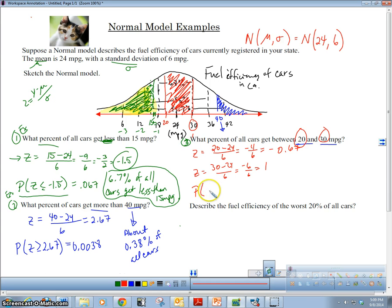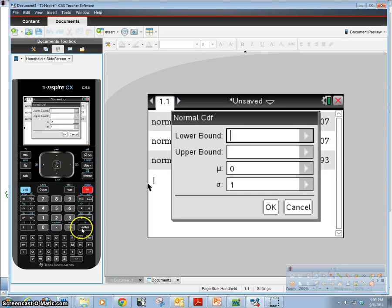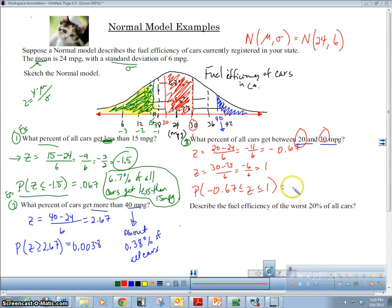We're going to go to our calculator. Menu, statistics, distributions, normal CDF. My lower bound is -0.67, and my upper bound is 1, tab tab tab. And I get 0.589, which I'm just going to say is 0.59. So I got 0.59, which tells me that 59% of all cars in said state get between 20 and 30 mpg. There we've got three examples.